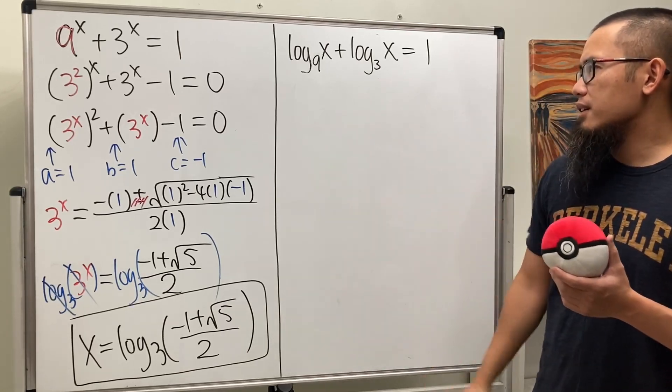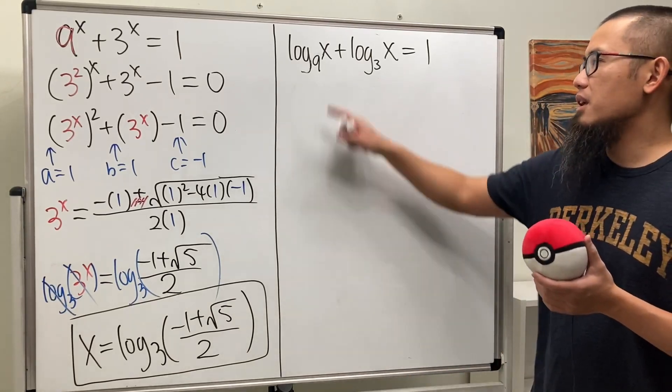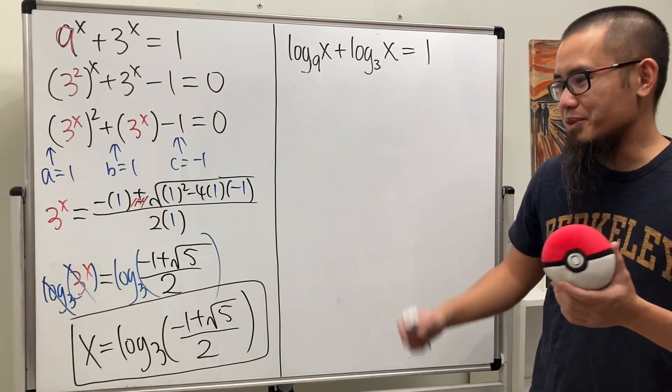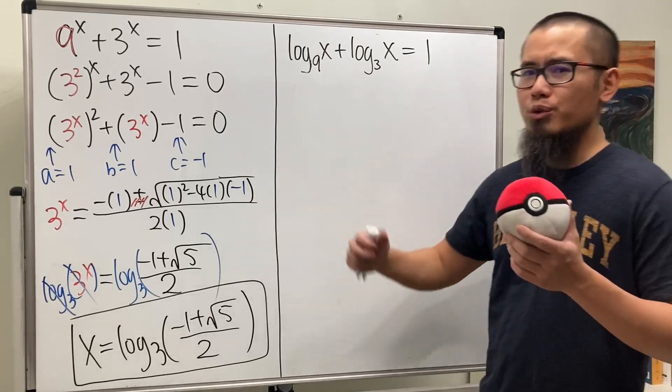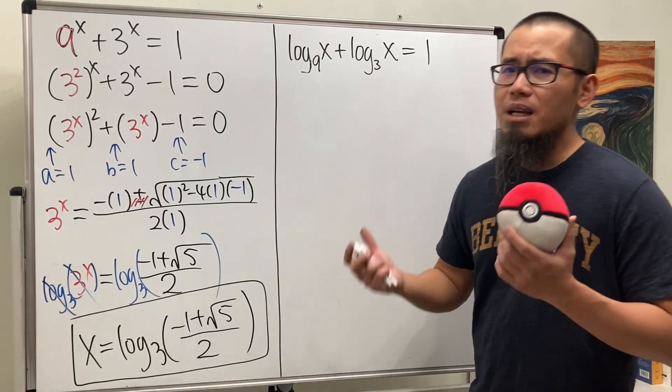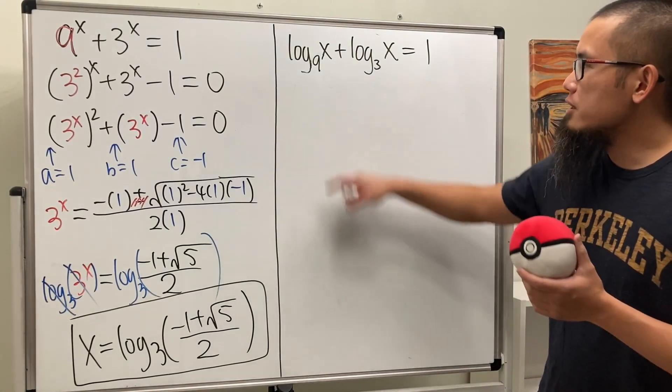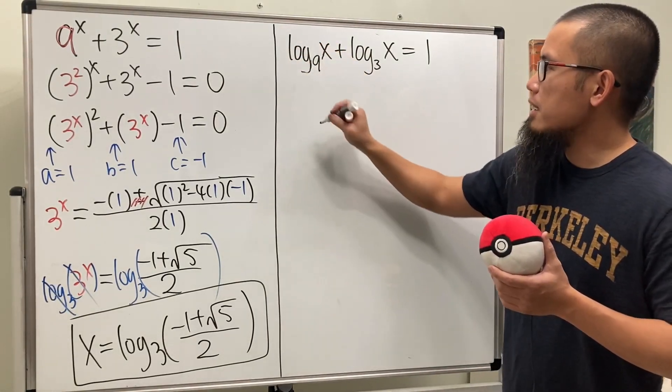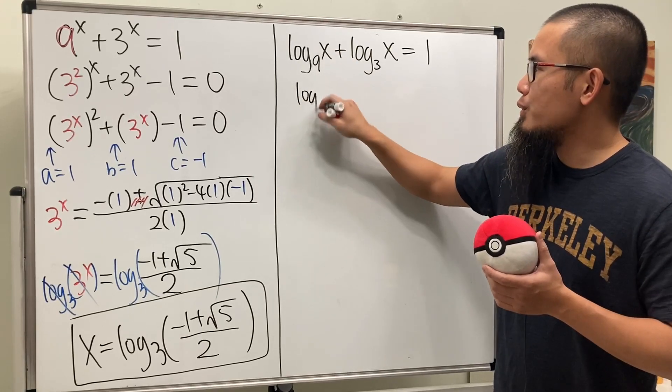Now for the second one, this right here is very doable because 9 is 3 squared. Some people might just want to do the exponentiation on both sides, but I prefer to show students the change of base formula.